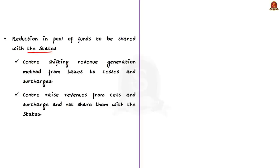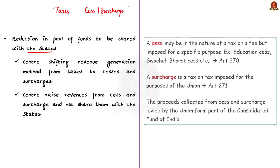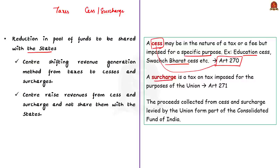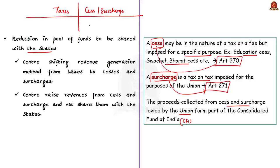The central government is also reducing the pool of funds to be shared with the states. To generate revenue, the central government imposes taxes, cesses, and surcharges. A cess is in the nature of a tax or fee imposed for a specific purpose — levied until the government gets enough money for that purpose; examples include education cess and Swachh Bharat cess. Article 270 of the Indian Constitution deals with cess. A surcharge is a tax on tax imposed for purposes of the union, dealt under Article 271. The proceeds from cess and surcharge form part of the Consolidated Fund of India, and importantly, the central government is not required to share cess and surcharge revenue with the state governments.